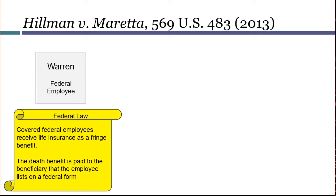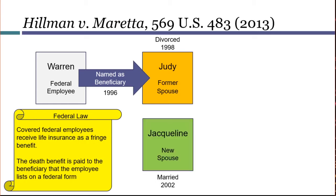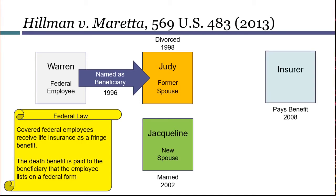Back to Warren. He filled out the federal form and listed his spouse, Judy, as his beneficiary. But Warren and Judy got divorced in 1998. Warren then remarried a woman named Jacqueline, but he never updated his federal insurance form — that continued to list Judy as the beneficiary. Warren died unexpectedly in 2008, so at that point the insurer was obligated under federal law to pay the death benefit to Judy.